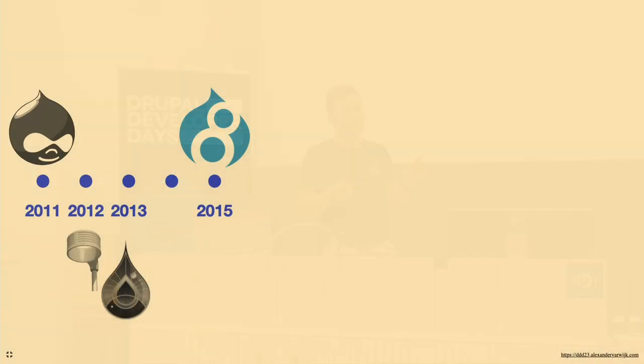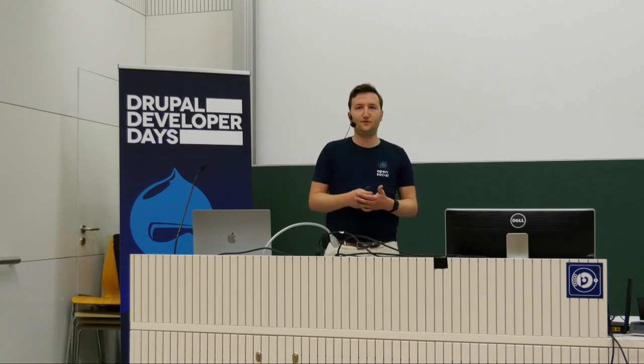Fast-forwarding to 2015, Drupal 8 was released. This was a major shift going from Drupal 7 to Drupal 8, accompanied by a redesign of the Drupal.org website. As a community we made a push to get off our island and adopt more Symfony. But it also led to a difficult upgrade cycle — we still see that with Drupal 7 only having end-of-life in January 2025.